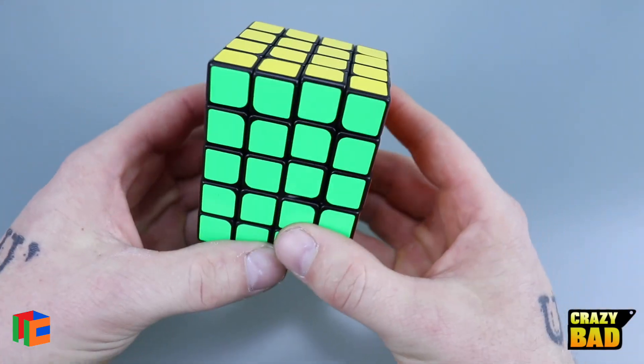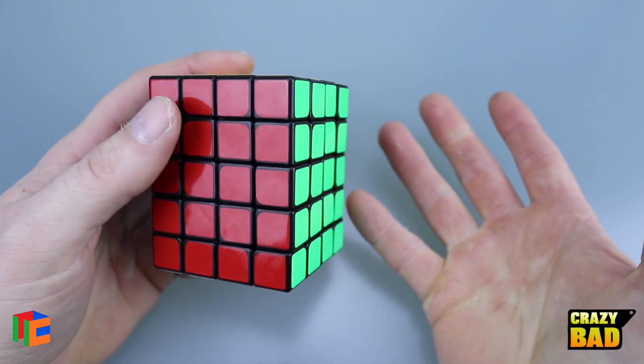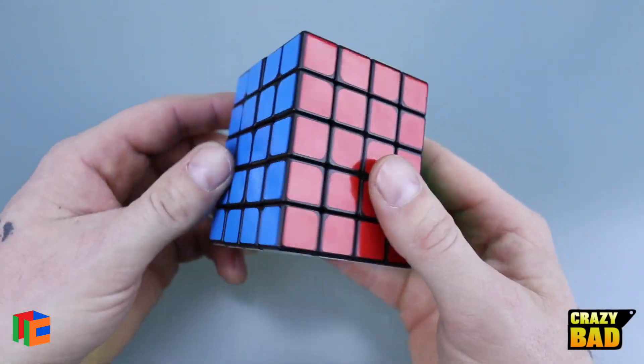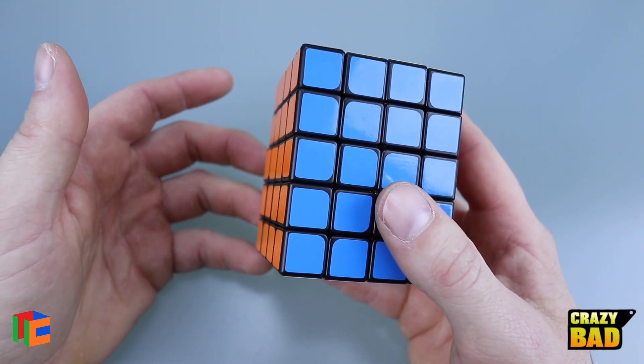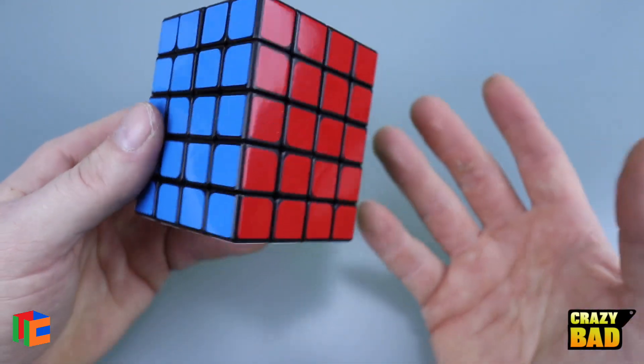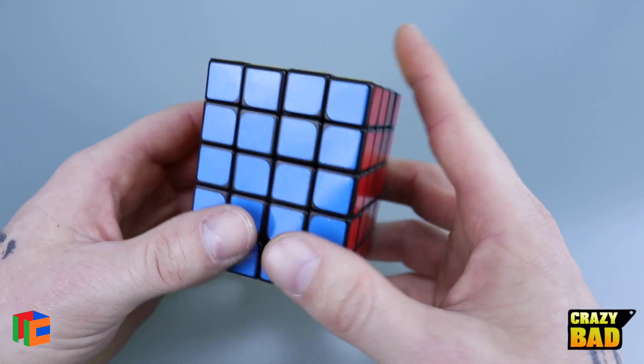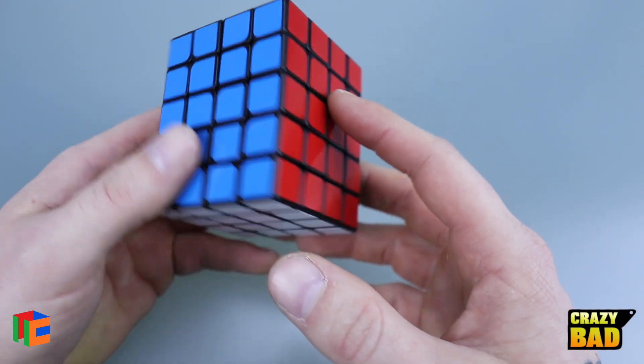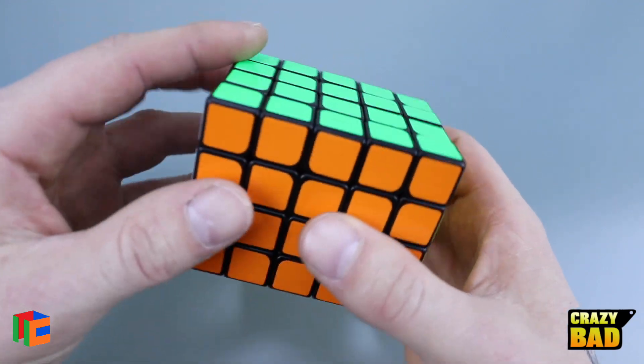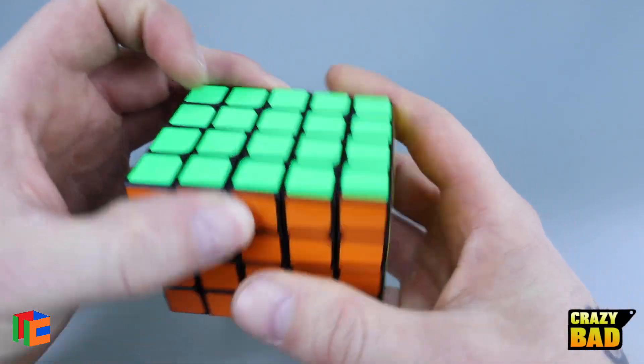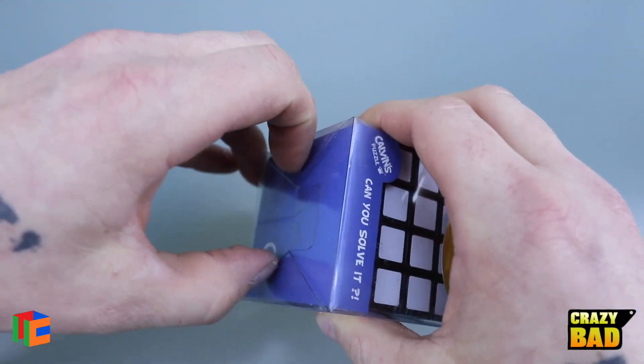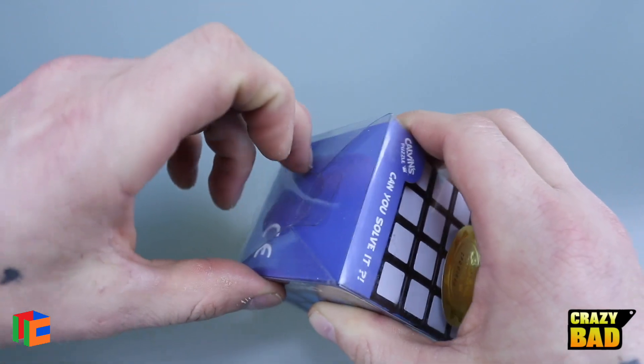All right, so you can get these everywhere. Currently you can get them on TheCubicle.us, they're $29.99. Other mass-produced puzzles I have from Calvin's were like $36, so that's actually a pretty good price. You can get this in white, blue, or black and it weighs 162.3 grams.